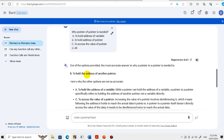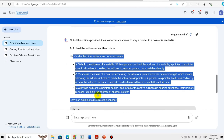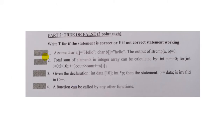This is the correct answer. The total sum of integers can be calculated by: int sum = 0; for (int i = 0; i < 10; i++), then cout sum += x[i]. So sum = sum + x[i], then cout sum. The pointer is initialized to 0, and the answer is false in this case.